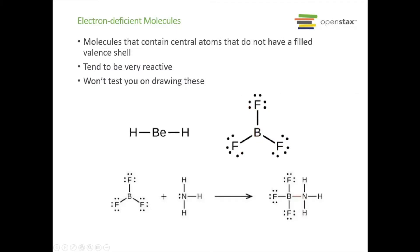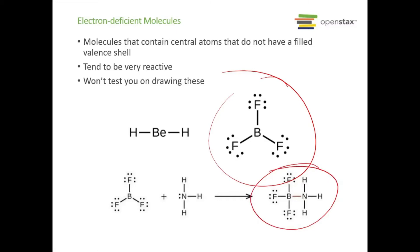Electron-deficient molecules have central atoms that do not have a filled valence shell and tend to be very reactive. Boron is the main example — in advanced inorganic chemistry, boron chemistry is a major topic. For instance, boron trifluoride reacts with ammonia to form a larger compound. You won't be tested on drawing these structures since you simply need to know how they are configured.